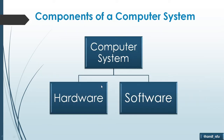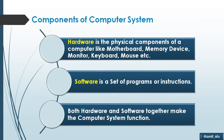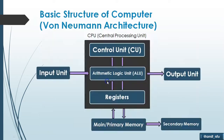Components of a computer system can be understood as a combination of hardware and software. Hardware refers to the physical components of the computer like motherboard, memory devices, monitor, and keyboard. Software is a set of programs, instructions, or commands given by users to the computer system. Both hardware and software together make the computer system functional.